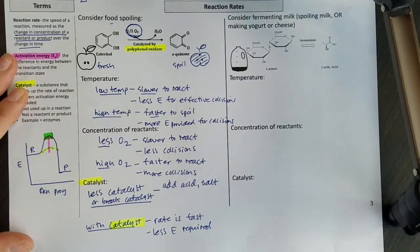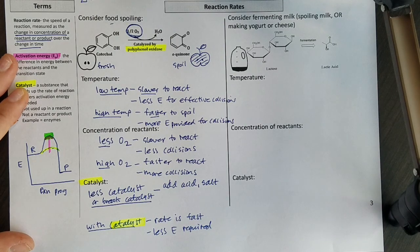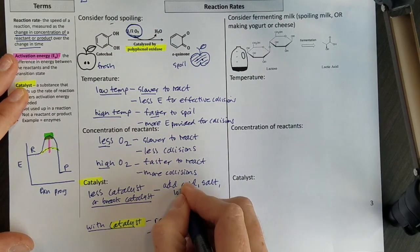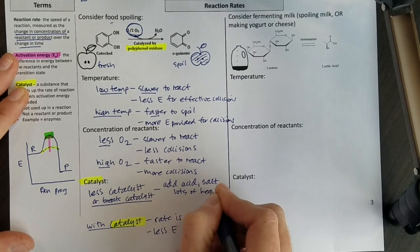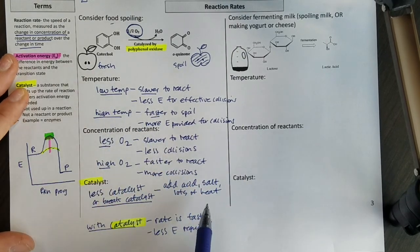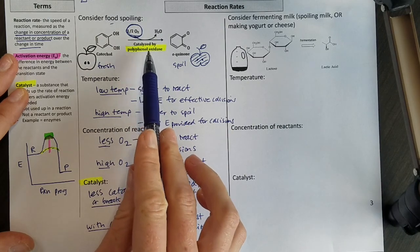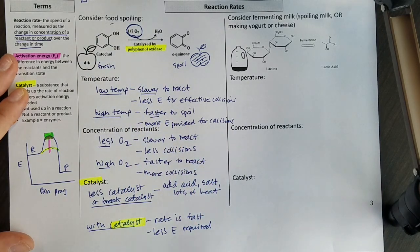Also, something like meat, we often preserve by just salting it, turning it into some kind of beef jerky or something like that. Or you can also add lots of heat, not just a little bit of heat, but a lot of heat, and a lot of heat will actually unwind or denature that enzyme, and now it won't work anymore.